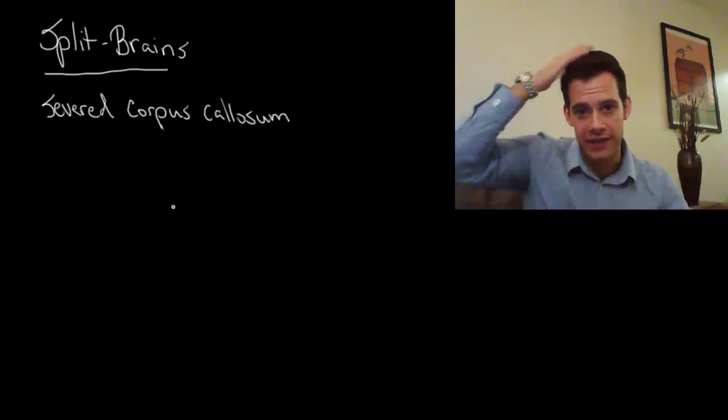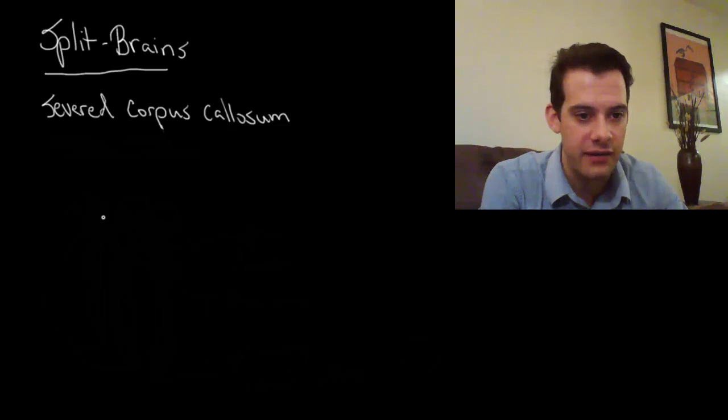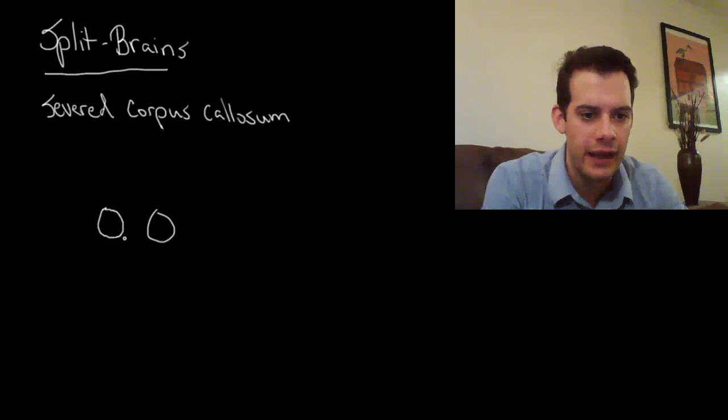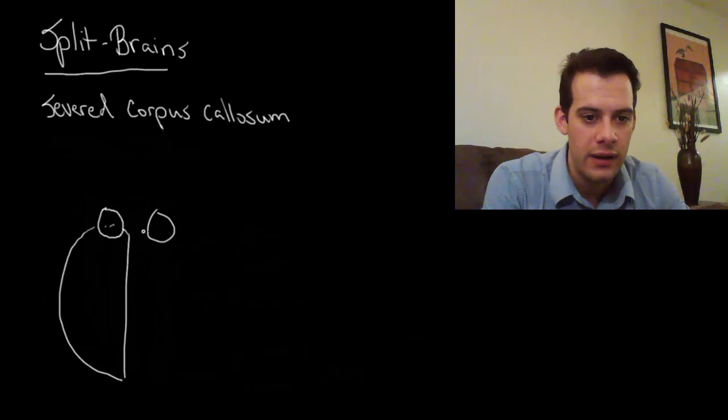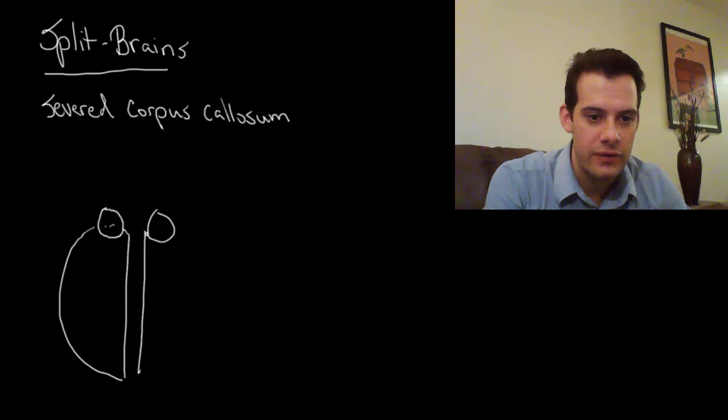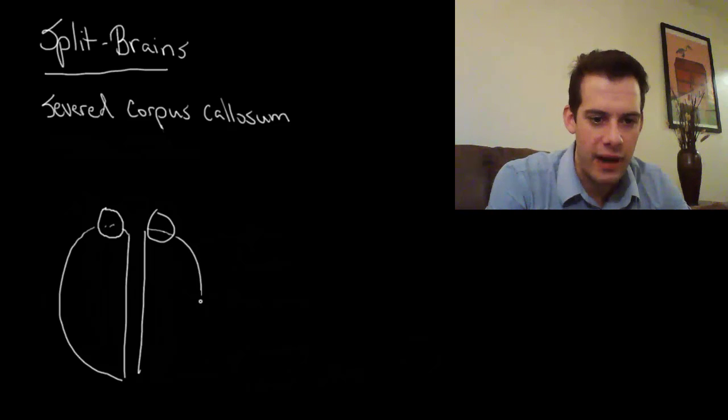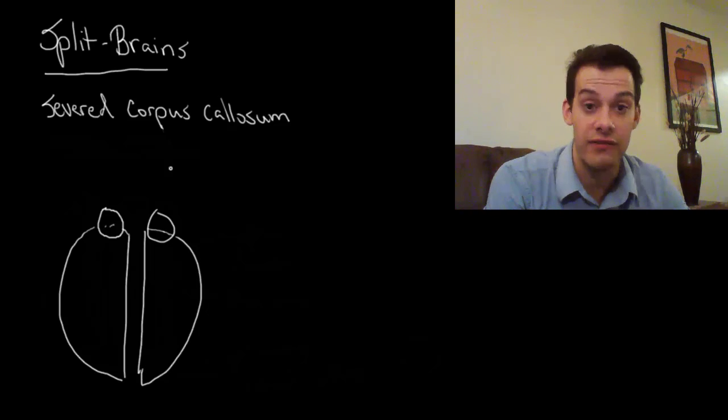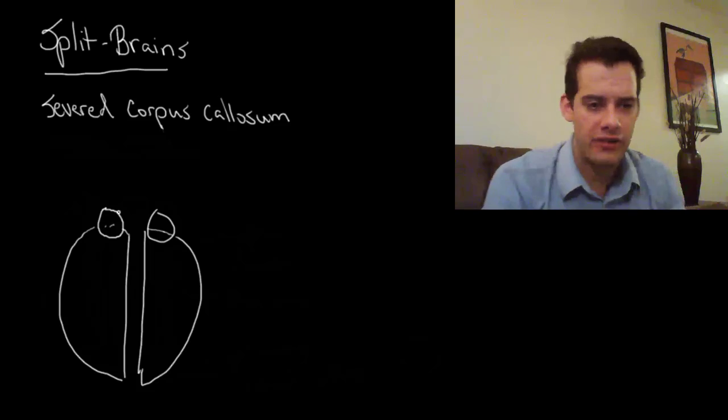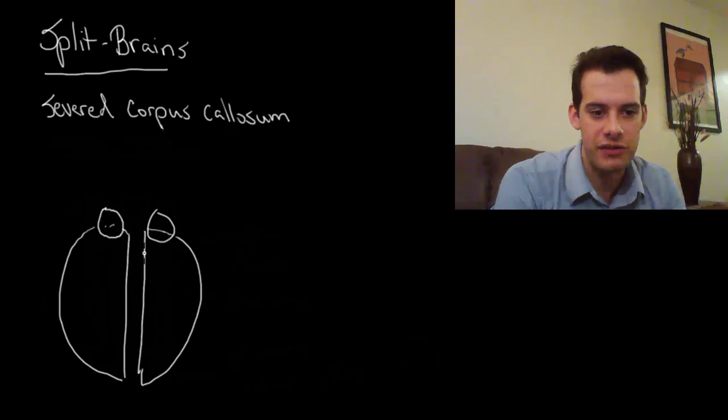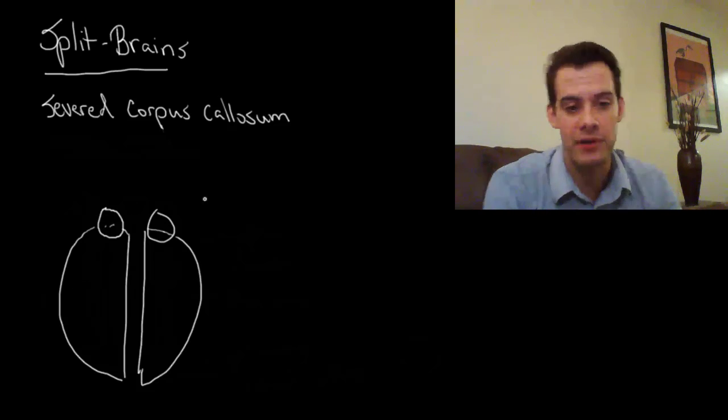So let's say we're looking down sort of the top of somebody's head. So here's their left eye, and here's their right eye. And then we've got their left hemisphere here. We're looking down, so it's going to sort of overlap the eye there, but we'll do our best. This won't be the most anatomically correct brain diagram you've ever seen, but hopefully we'll get the point across. So here's the left eye, here's the right eye, here's the left hemisphere, here's the right hemisphere.